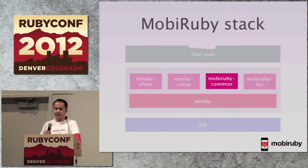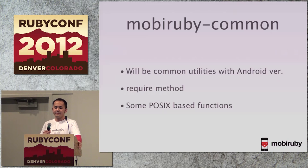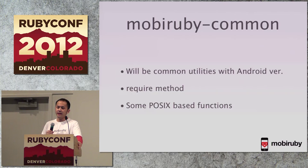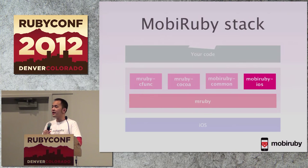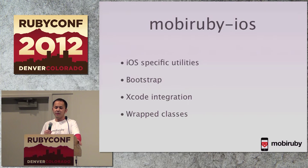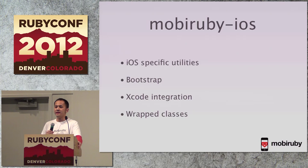The fourth component is mRuby-common, intended for the future Android release. This library provides common utilities across iOS and Android versions. Currently it provides only require and load methods — standard mRuby does not support those. The fifth and last component is mRuby-iOS, the main part of MobiRuby. It provides iOS-specific utilities including Xcode integration. In the first version this component is still limited — I need help with Xcode integration.